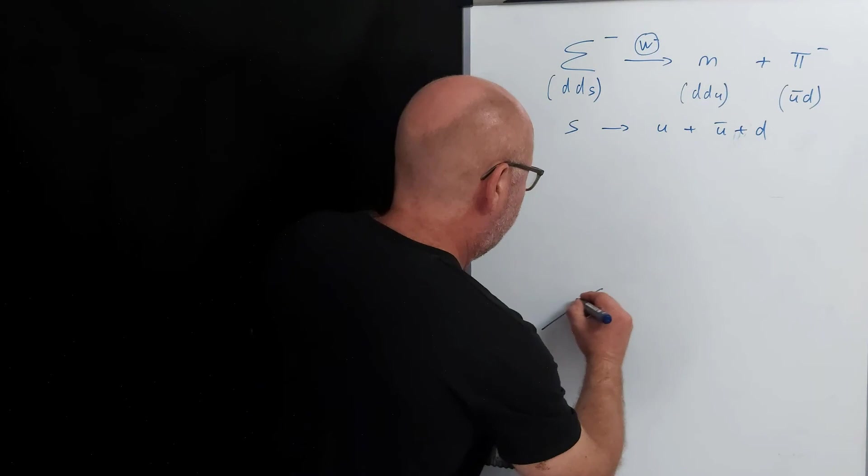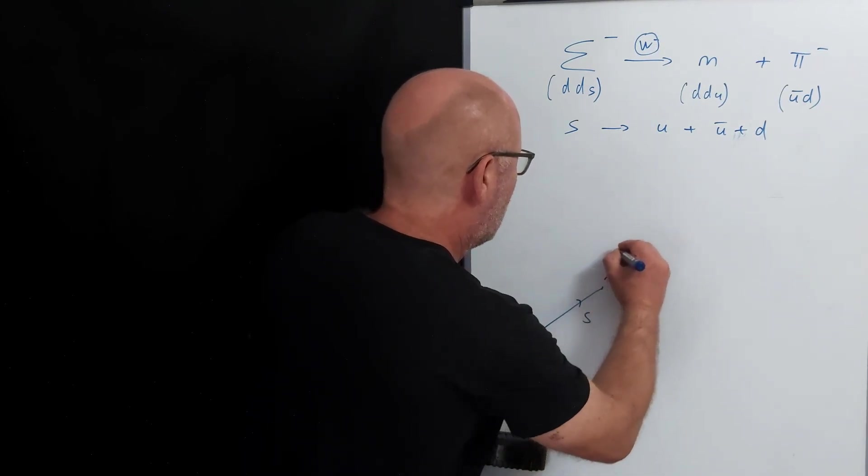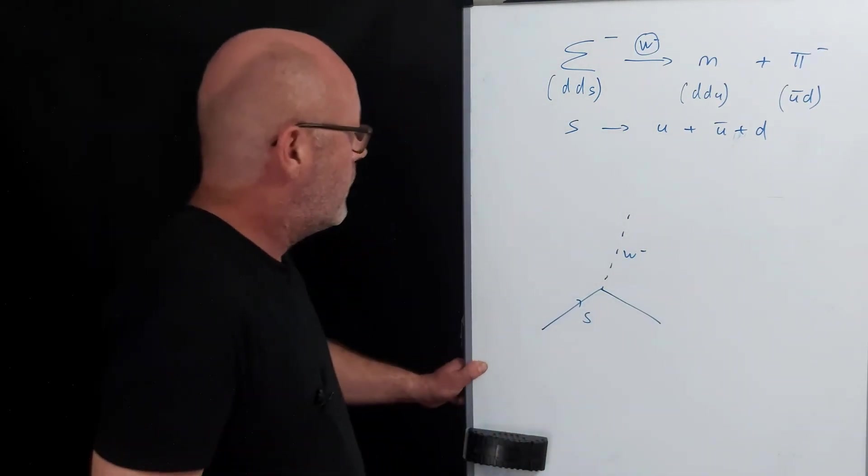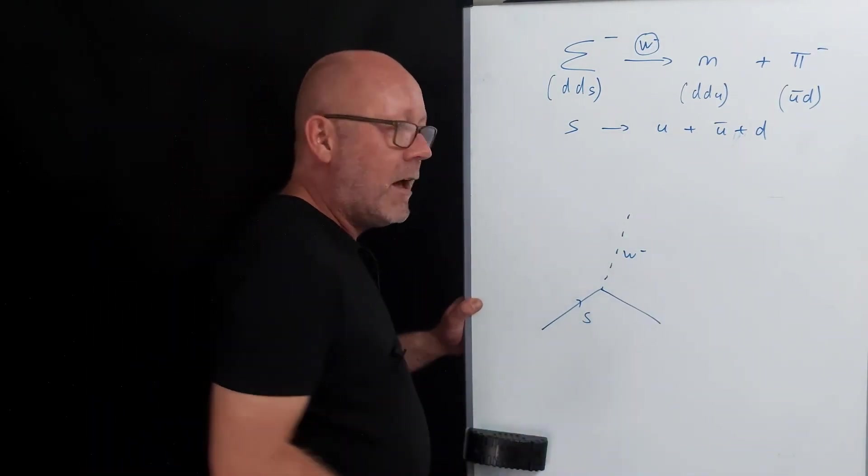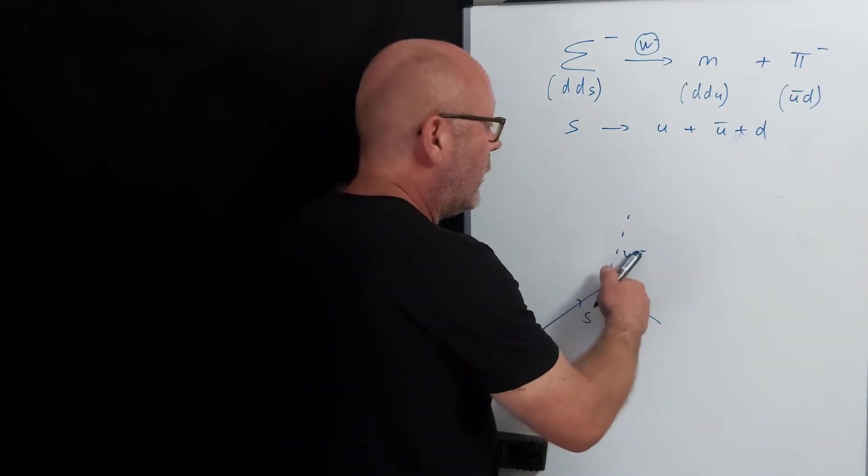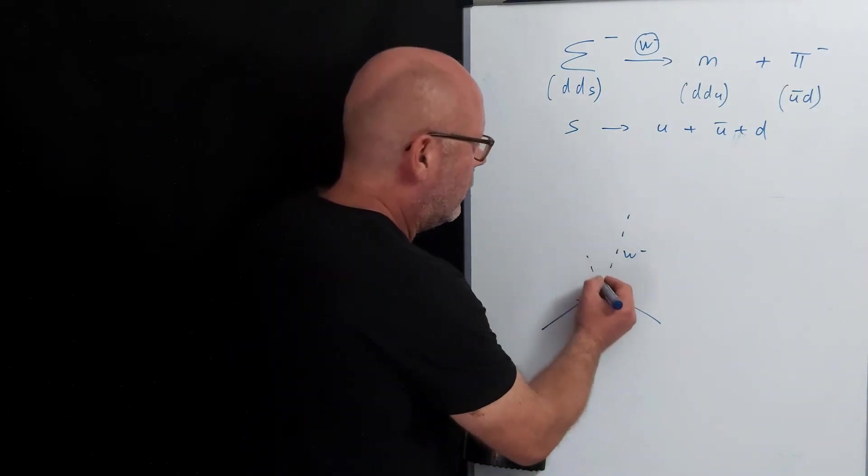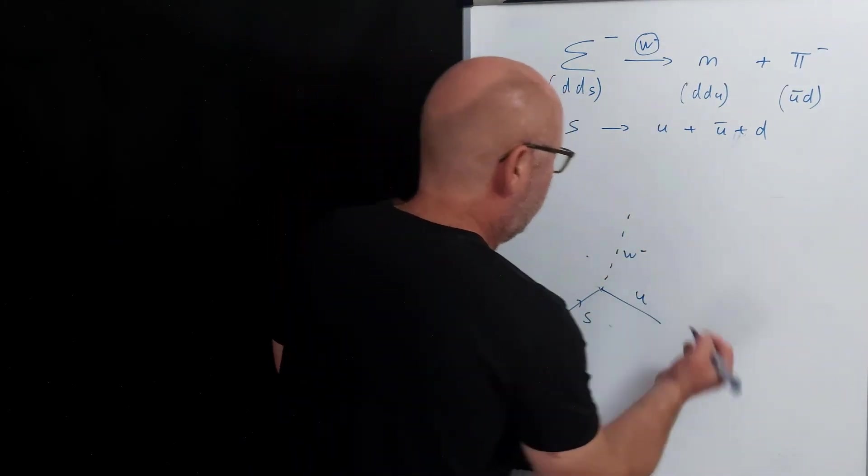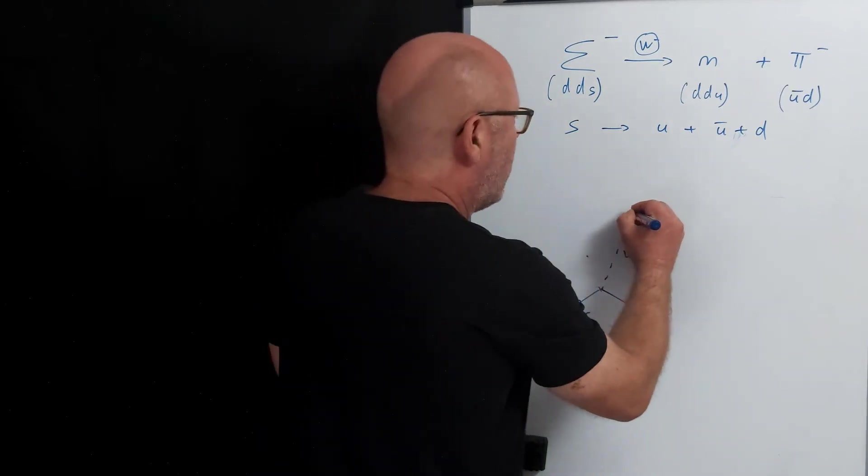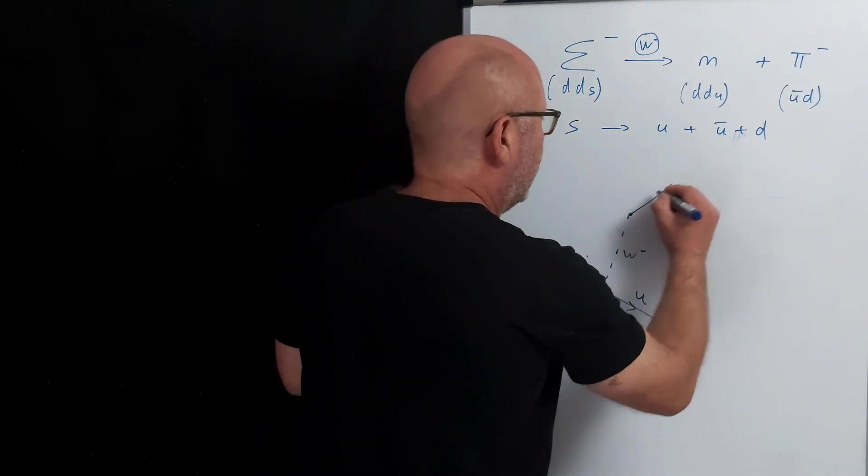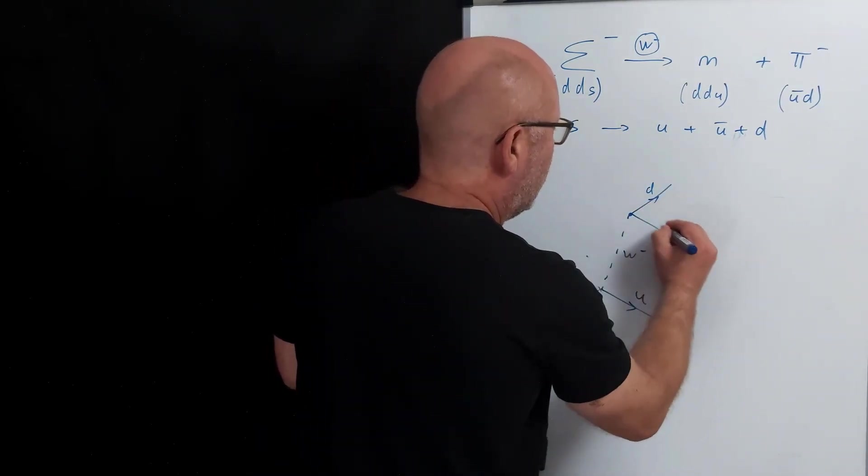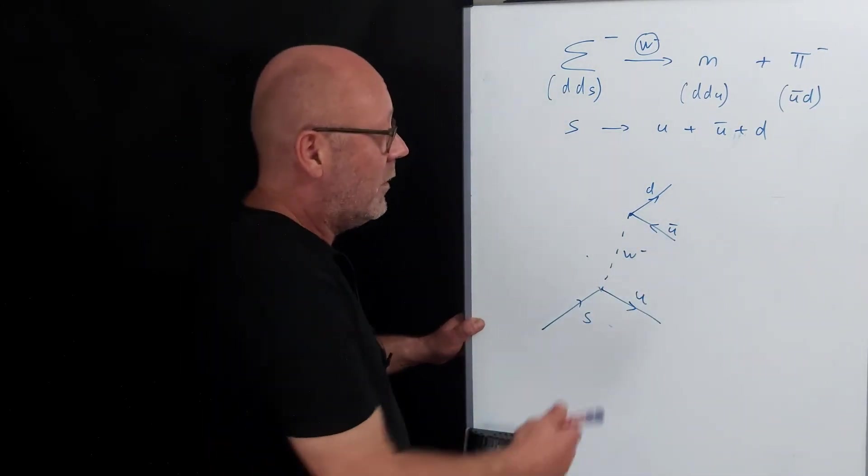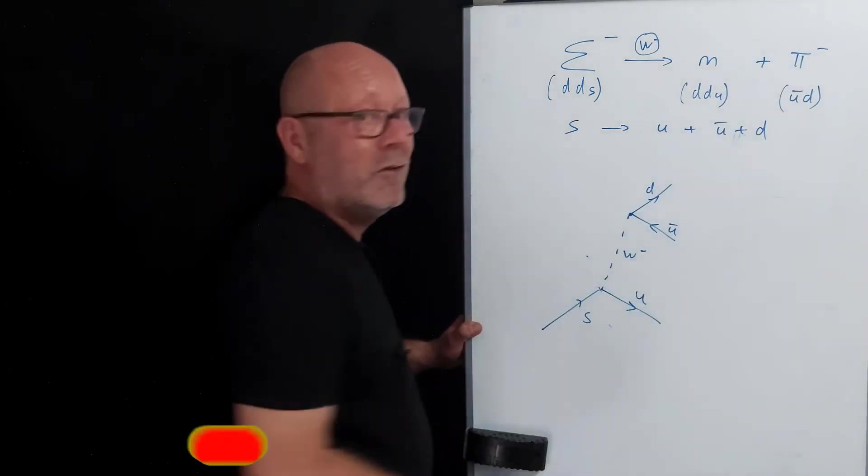Okay, so we start with an s and we draw the W- boson. What should we draw here? Well, s will have a charge of minus one-third. W has a charge of minus one, so we need to have a charge of two-thirds on this side. We only have the up that does this. And now the W- will split into the down and the anti-up. And it kind of makes sense because they need to be not too far from each other to create a π- boson.